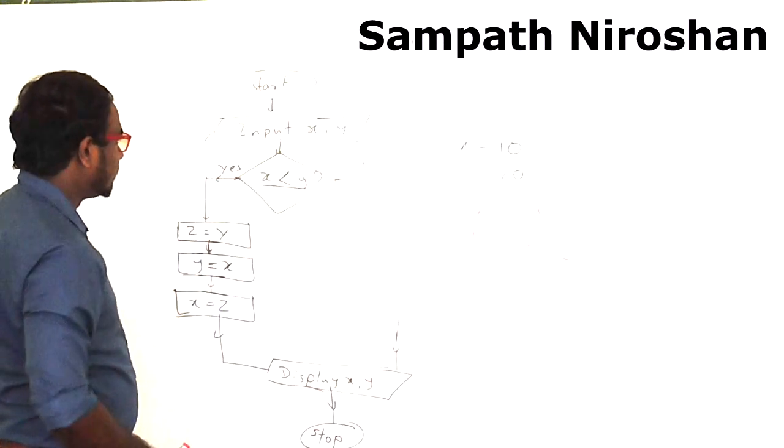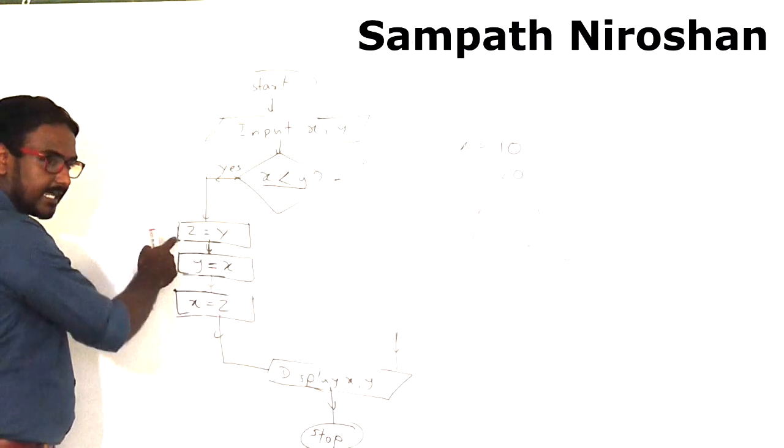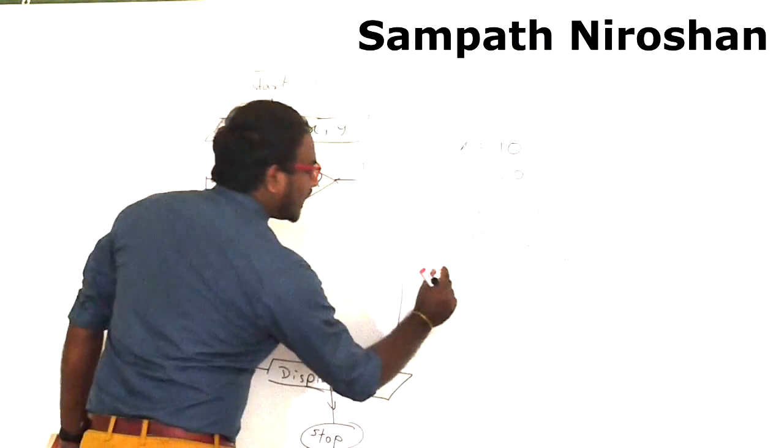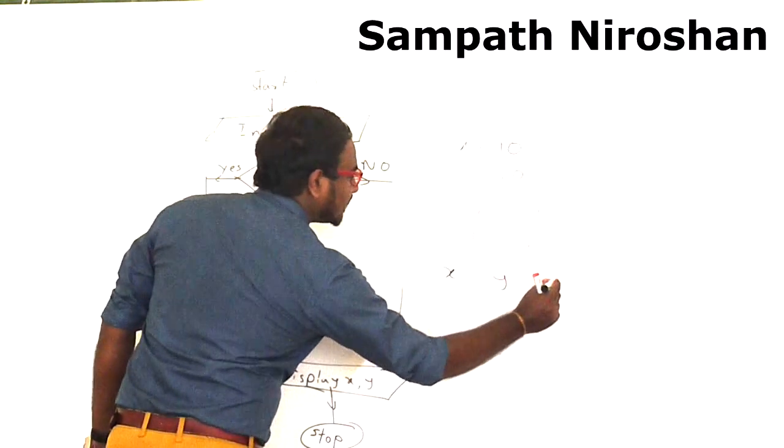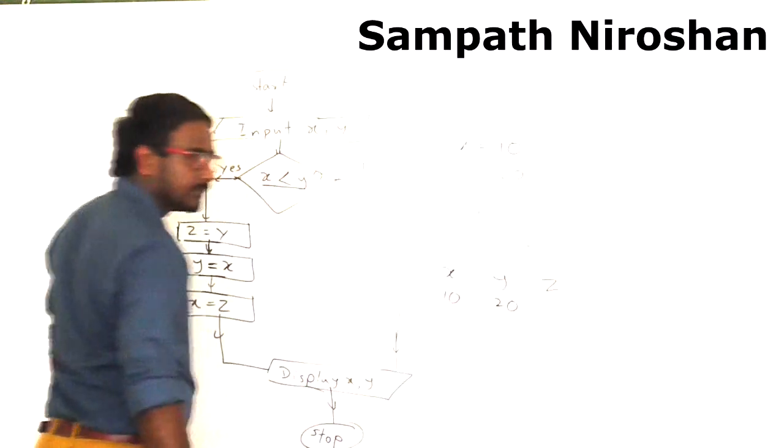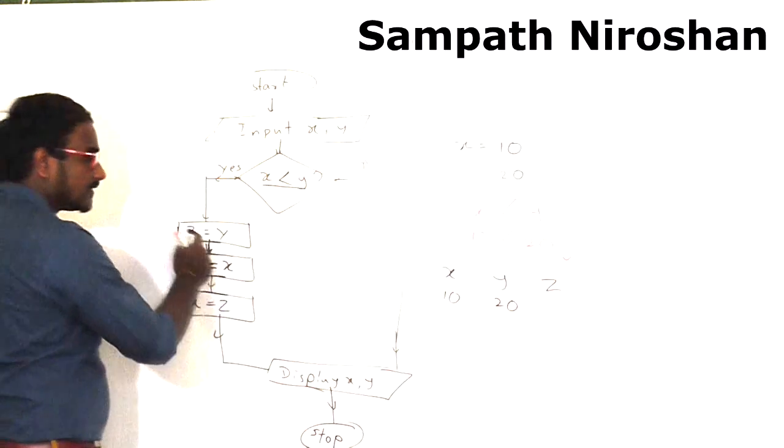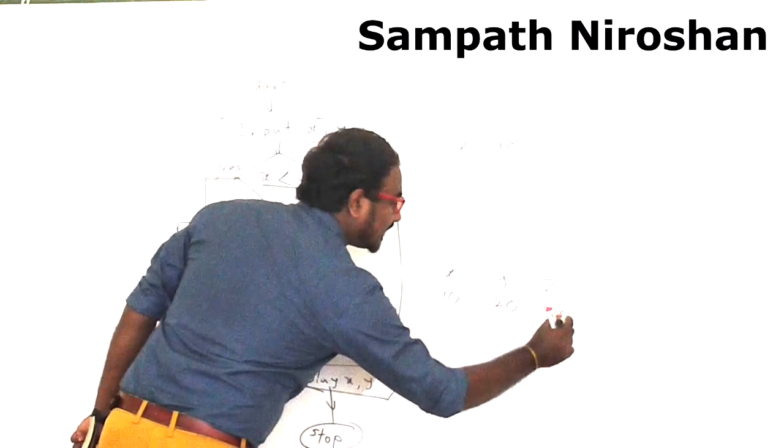Through the yes path you have z. So initial value of y will be given to z. Right now I have three variables: x, y, z. X is 10, y is 20. Now y's value will be given to z, so z turns 20.